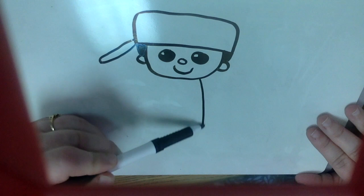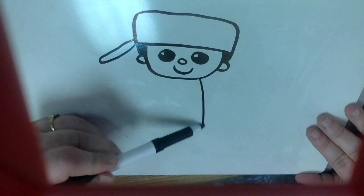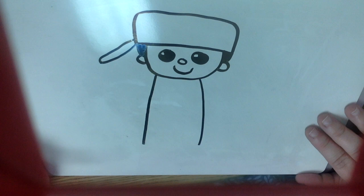Now we're going to draw his body. So down from each side you're going to draw a line, and then you're going to draw an upside down V-shape to make his legs.